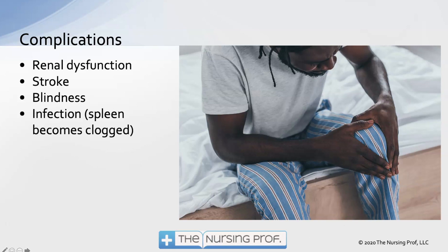Complications include renal dysfunction from sickled cells clogging the kidneys, stroke, blindness, and infection. The spleen becomes clogged with sickled cells and can no longer function properly. Since one of the spleen's functions is preventing infection, patients may experience an increased infection rate when the spleen is no longer able to do its job.